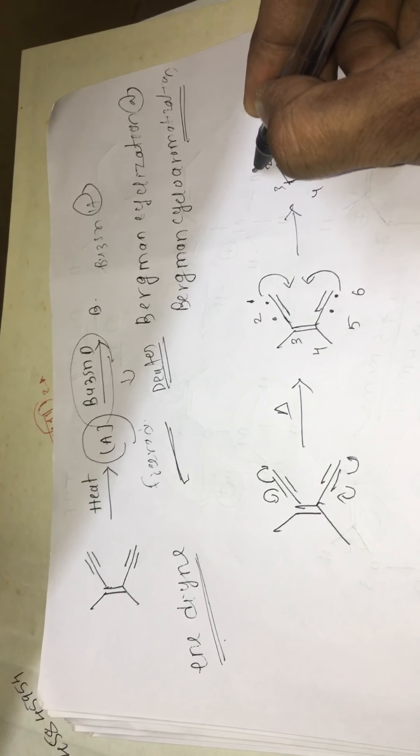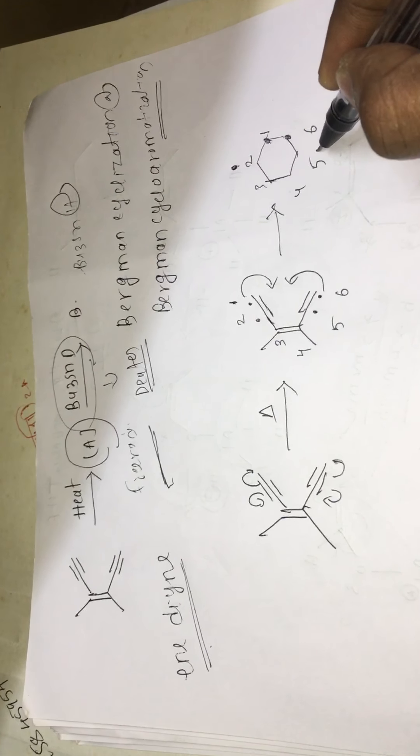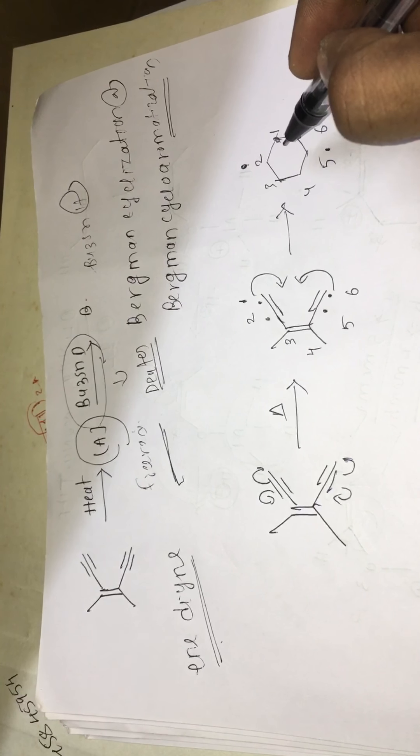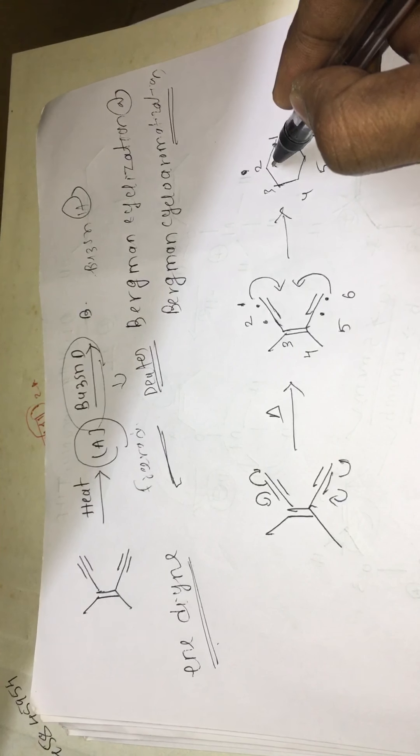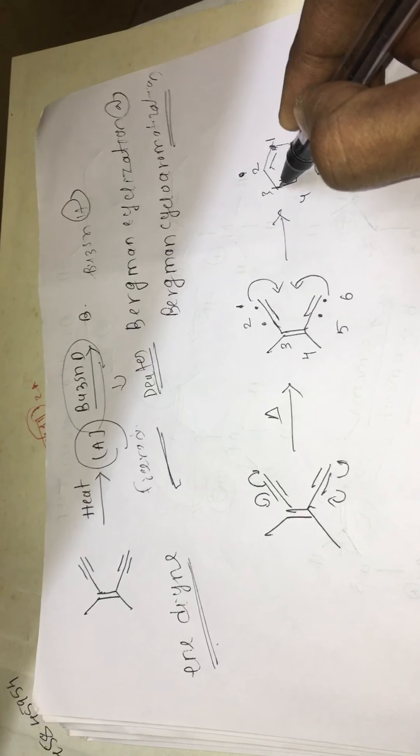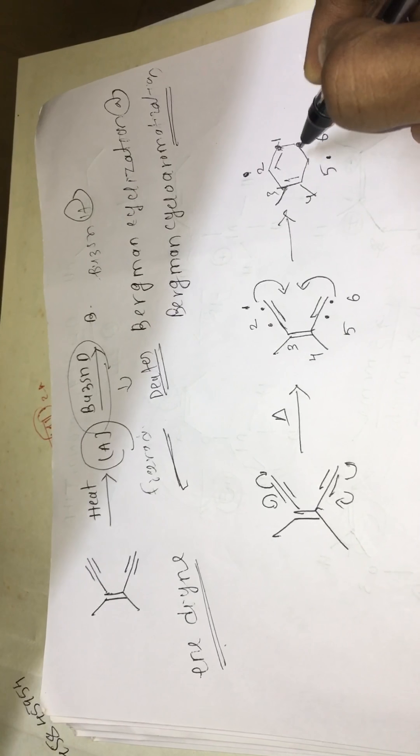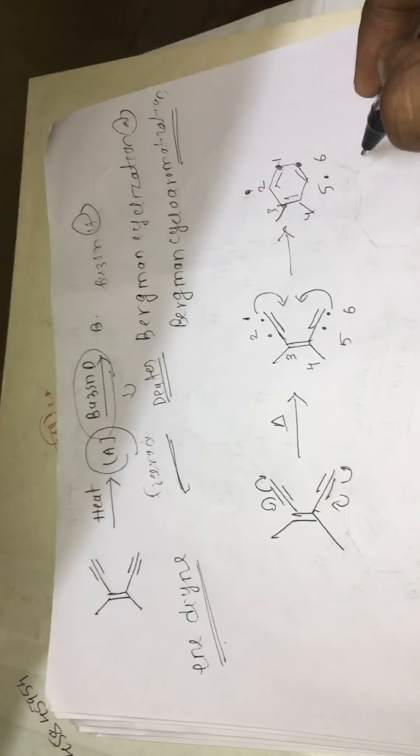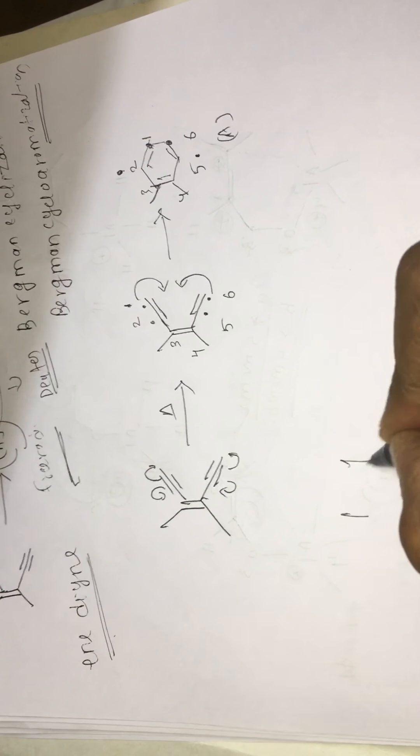At the second position radical is there. At the fifth position radical is there. And there is a double bond between one and two, three and four. And here methyl groups. And five and six. So this is the A. So we got the product A. That is this one.